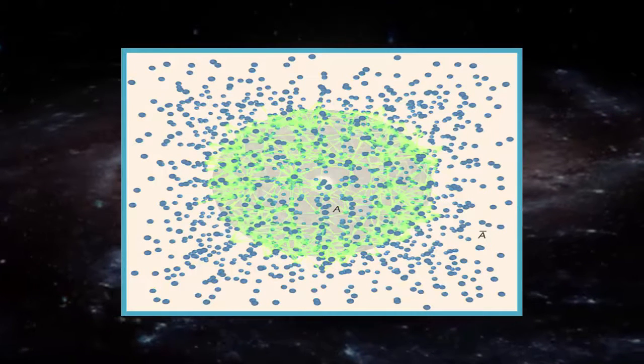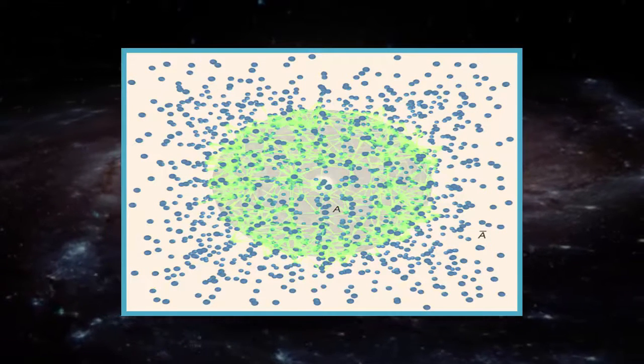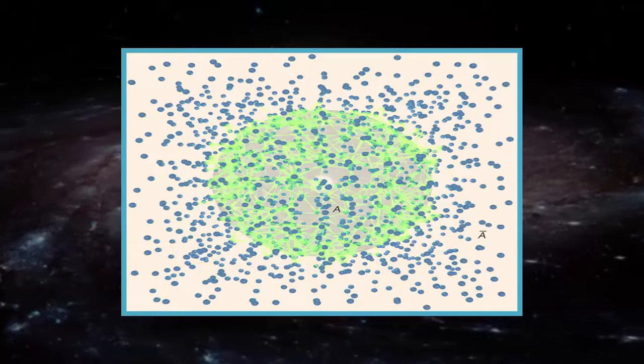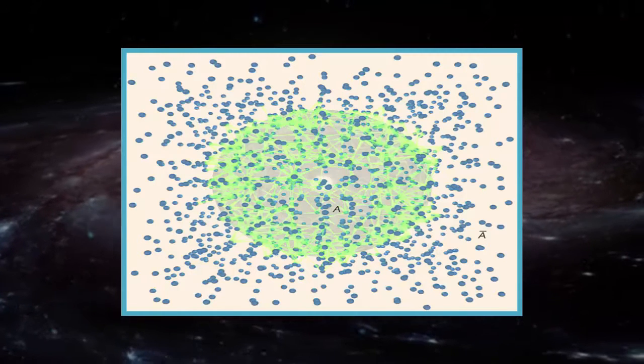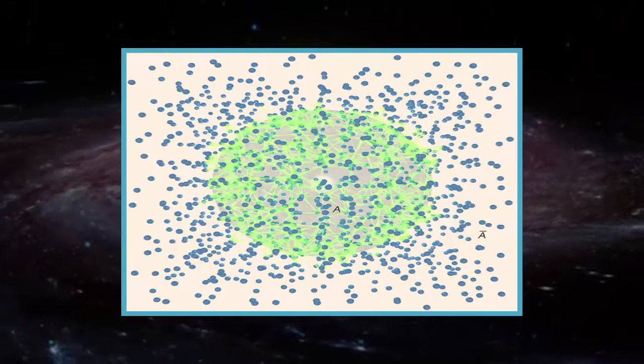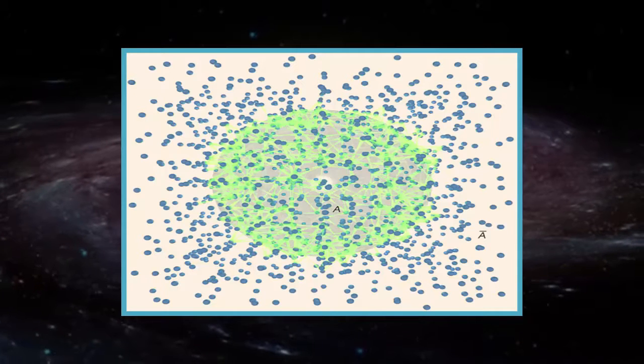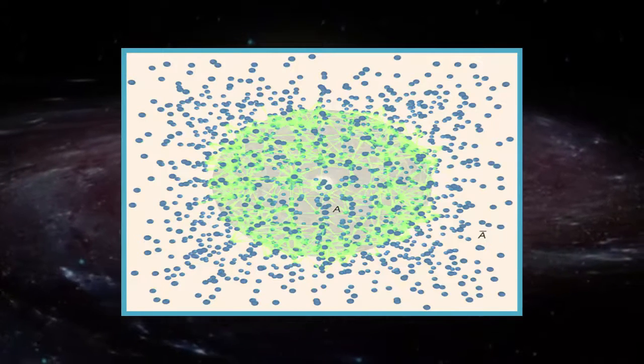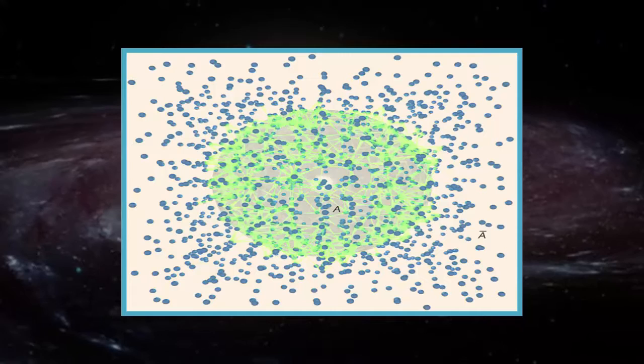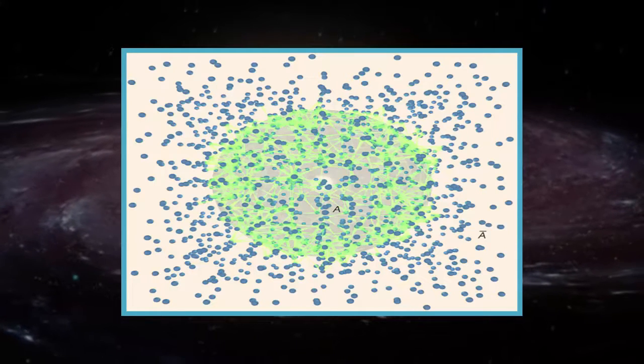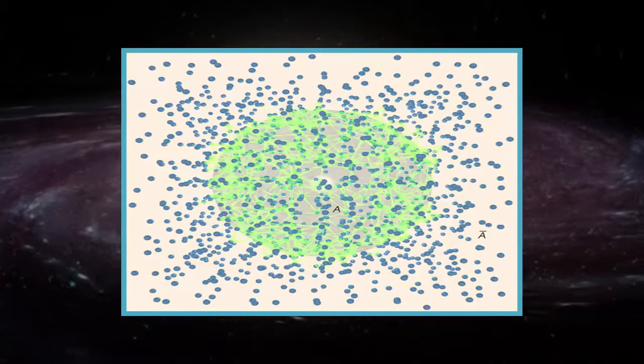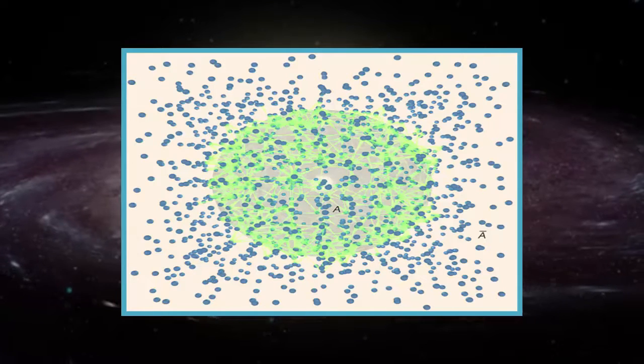In the 1970s, famed theoretical physicist Stephen Hawking and Jacob Bekenstein discovered something strange about black holes. They calculated that when matter falls into one of these bottomless holes in space, the amount of information it gobbles up—what physicists call its entropy—increases only as fast as its surface area increases, not its volume.